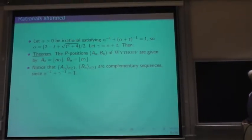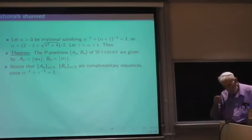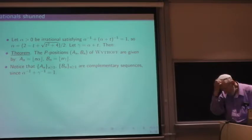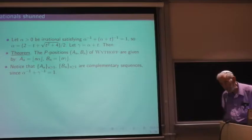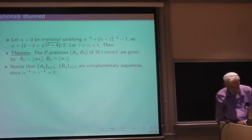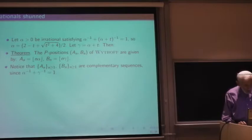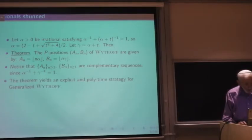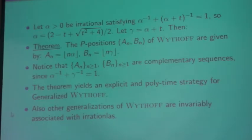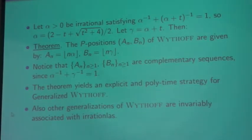And these are complementary sequences because 1/alpha + 1/gamma is 1. This gives you the right density. Like when you take 2n and 2n minus 1, which we said gives you the right density for 2n, 2n minus 1, 1/2 + 1/2 is 1. This is certainly a necessary condition, but not a sufficient condition. But for the case of irrational alpha and gamma in this case, it's not only necessary, but also sufficient. All right. Also, other generalizations of Wythoff are invariably associated with irrationals. Rationals are shunned.